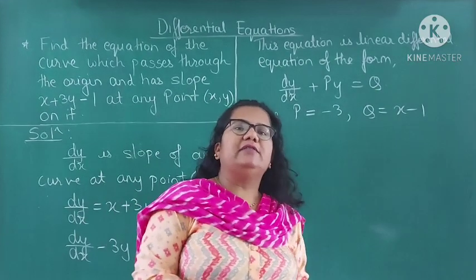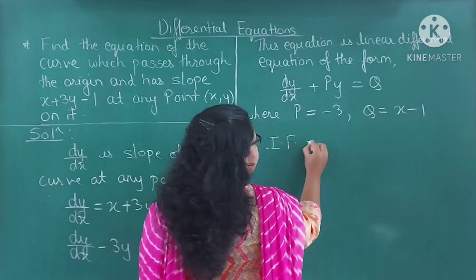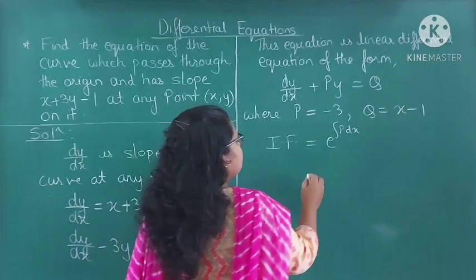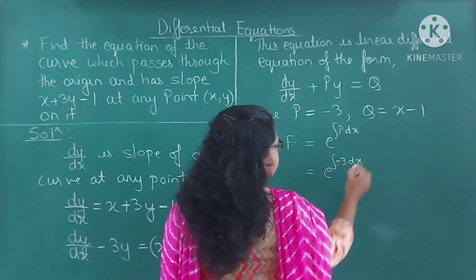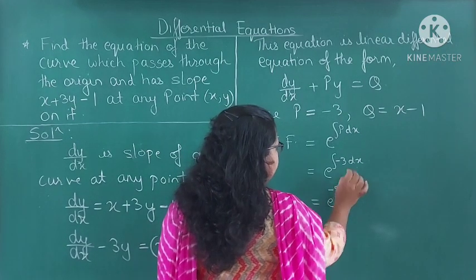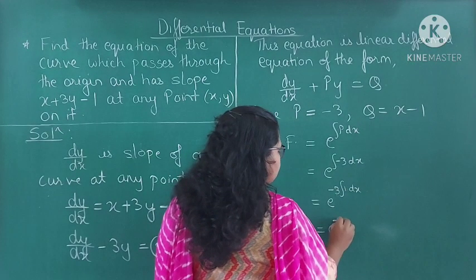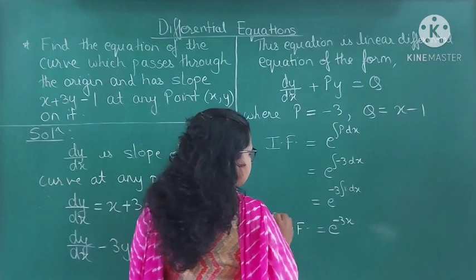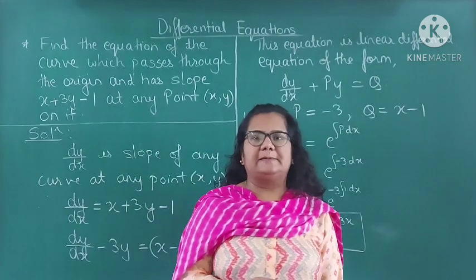After finding P and Q, what we do next is find the integrating factor. The integrating factor is equal to e raised to the power of integration of P dx. So this is equal to e raised to integration of minus 3 dx. Since minus 3 is a constant, this equals e raised to minus 3x. The integrating factor is e raised to minus 3x.